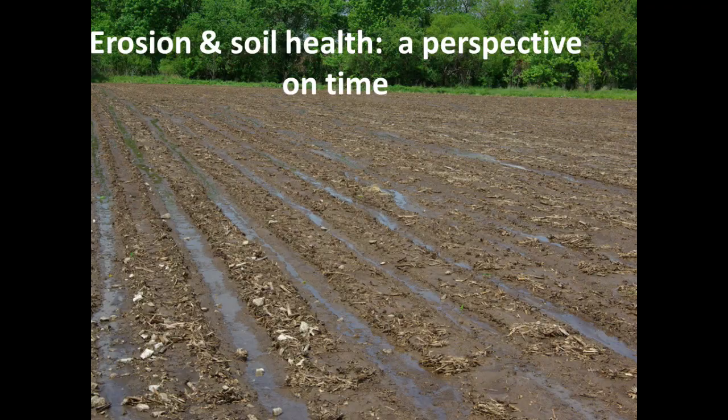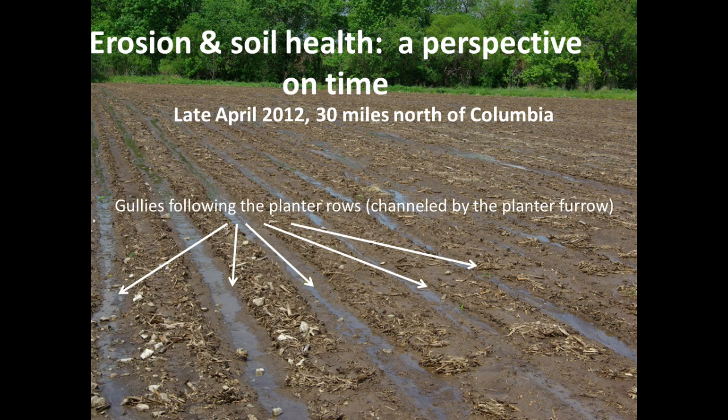This is a picture from last year in late April, right after a large, intense, heavy rainfall had happened the night before. You can see there's some standing water in that field and some terrain — some up and down. What happened was that there were some gullies following the planter rows. The corn had been planted but had not yet emerged. Just a little bit of disturbance that the corn planter created became the path of least resistance for the water in that heavy rainfall — they followed right down the rows and made gullies following each planter row.